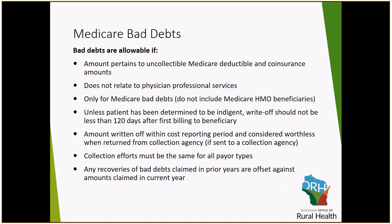A Medicare bad debt is allowable if it pertains to an uncollectible Medicare coinsurance or deductible amount. Please note that this cannot include any physician professional services and cannot include any Medicare HMO beneficiaries. In order to claim bad debt as allowable on the cost report, unless the patient has been determined to be indigent, the organization needs to document that the write-off did not occur within 120 days after first billing to the beneficiary. Collection efforts also need to be documented, and those efforts need to be consistent with all of your other payer types. We recommend that you refer back to your financial assistance and collection policy.